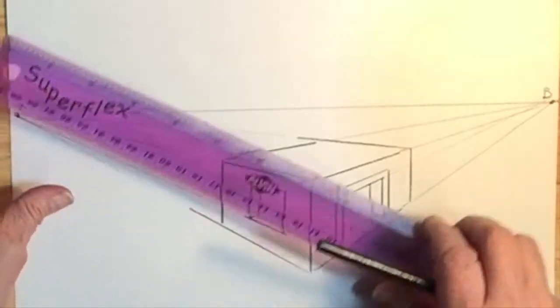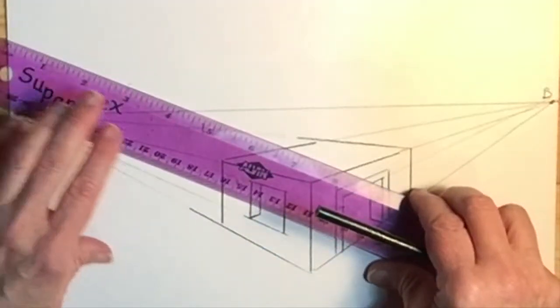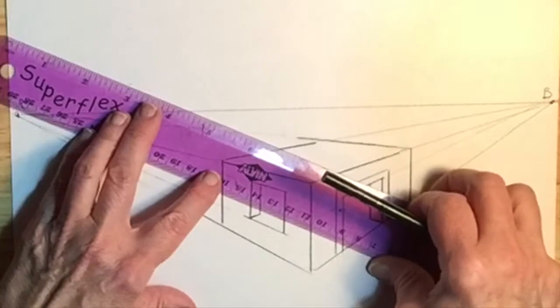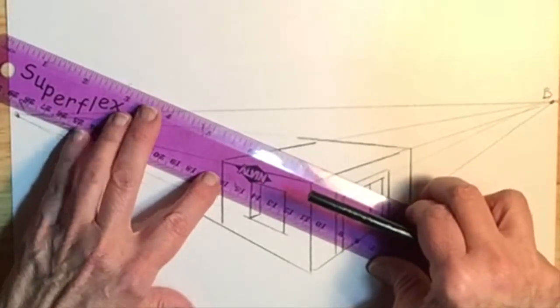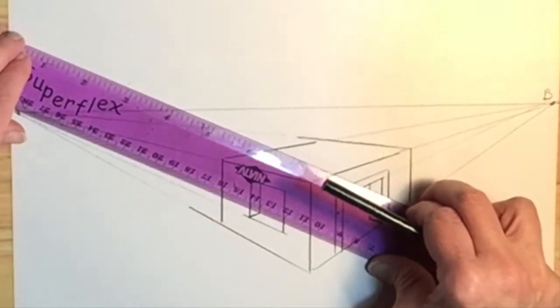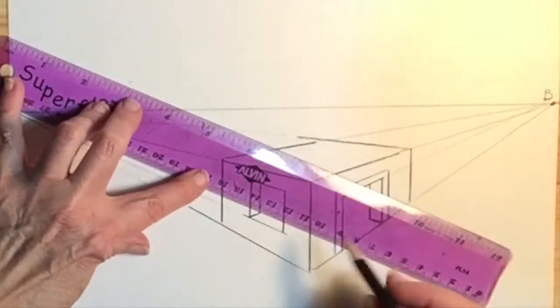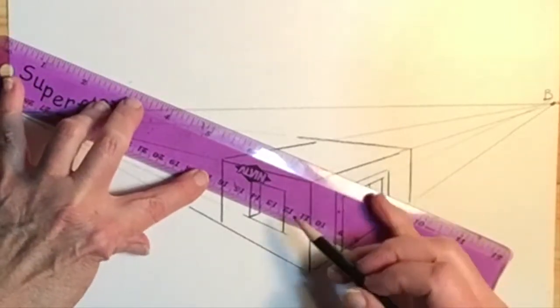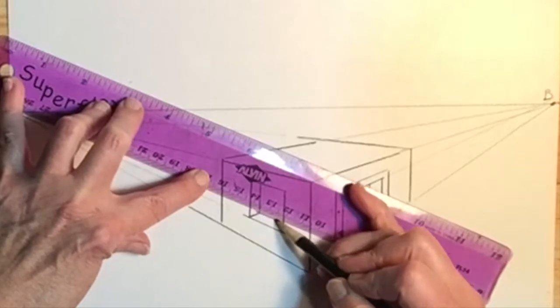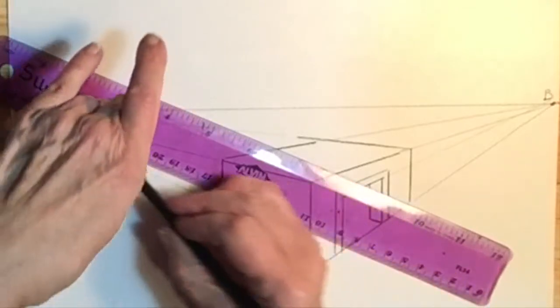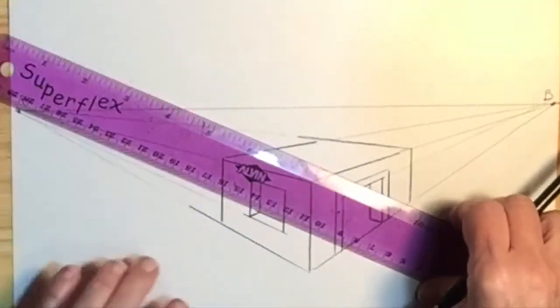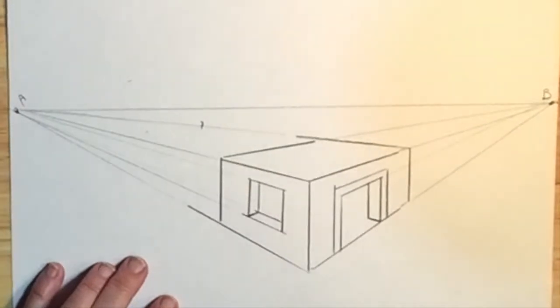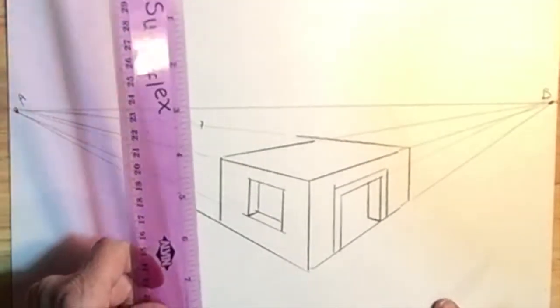And with this one, I line up this corner with A. And you can kind of figure this out as you go along, because you can try to think of what it would look like, and it'll help you a lot when you're trying to figure out which point to draw where. So now we have the thickness of the window, and we can add a frame just like we did with the door, but I won't do that here.